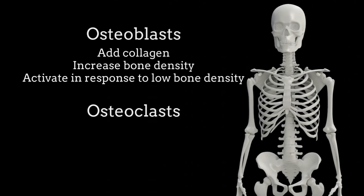Osteoblasts add collagen to our bones and increase our bone density, and can be activated in many ways. A primary response that activates these osteoblasts includes sensing a low bone density in our bodies. Osteoblasts constantly survey their area to ensure that our bones are strong enough to support us, but if they sense a decrease in density, osteoblasts put down more collagen in order to support us.